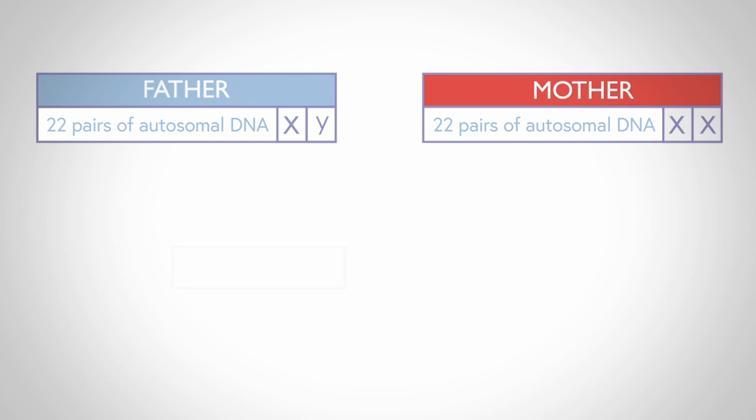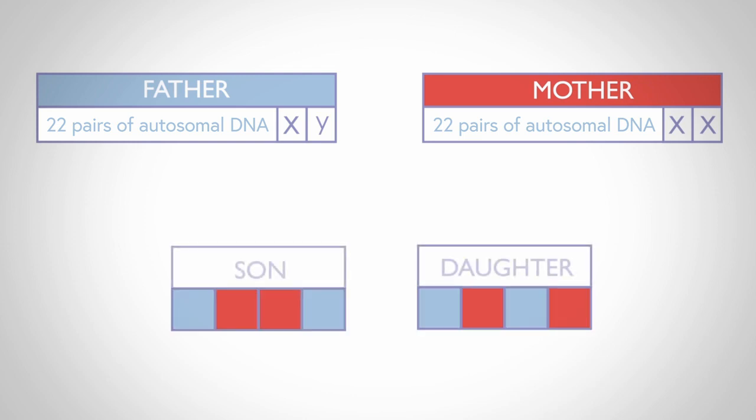You can see here that around 50% of your autosomal DNA is inherited from your father, shown in blue, and 50% from your mother, shown in red.